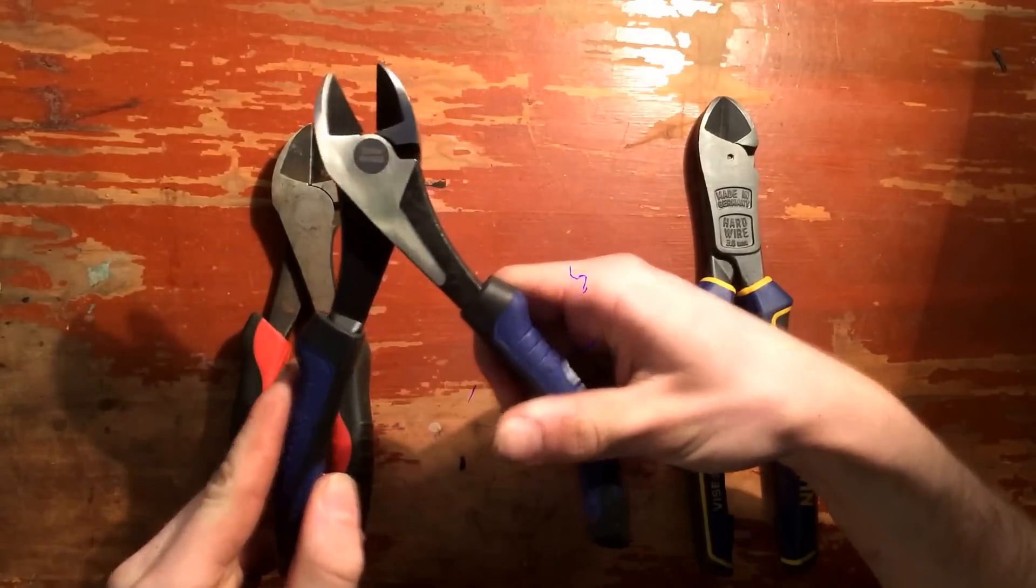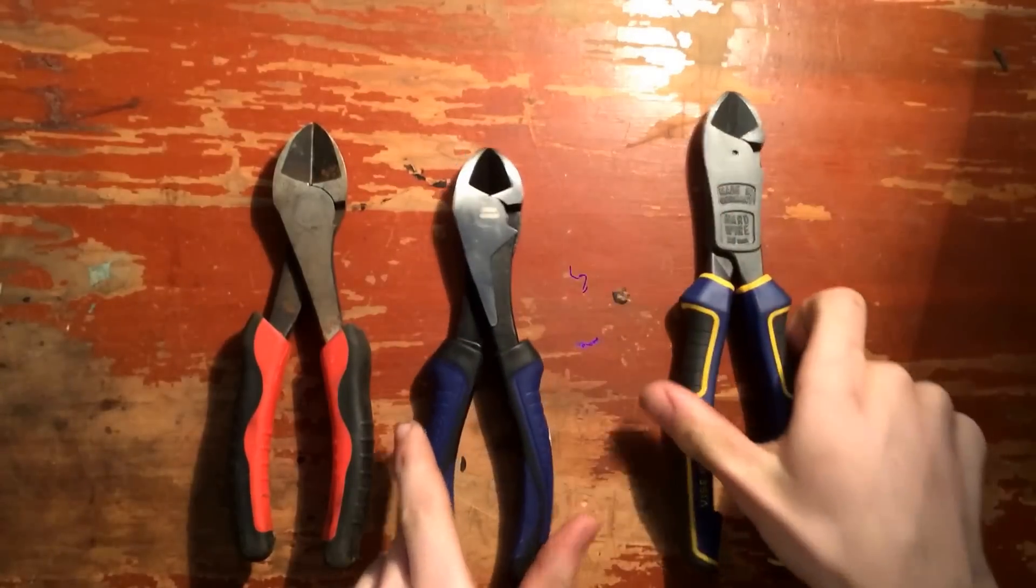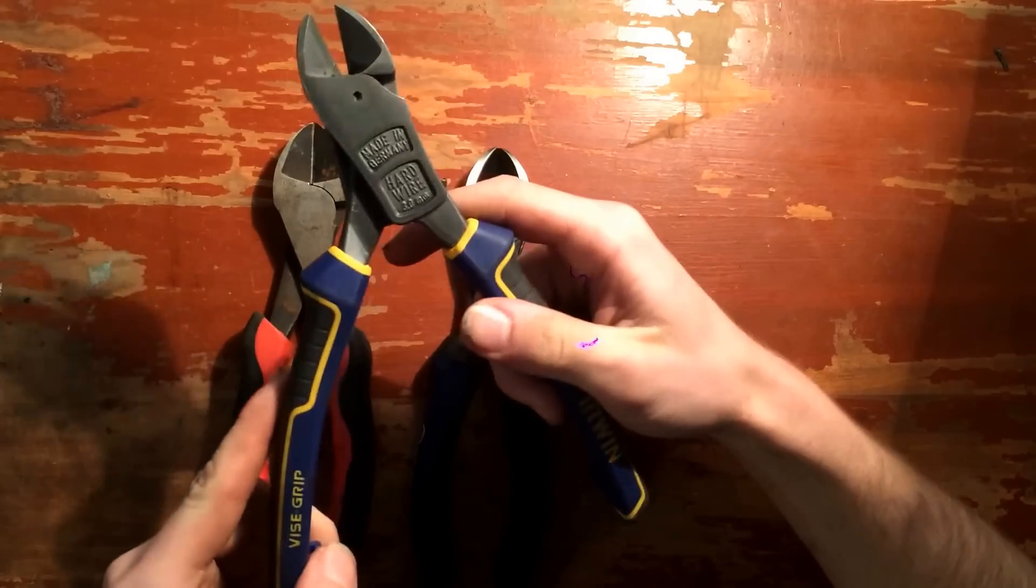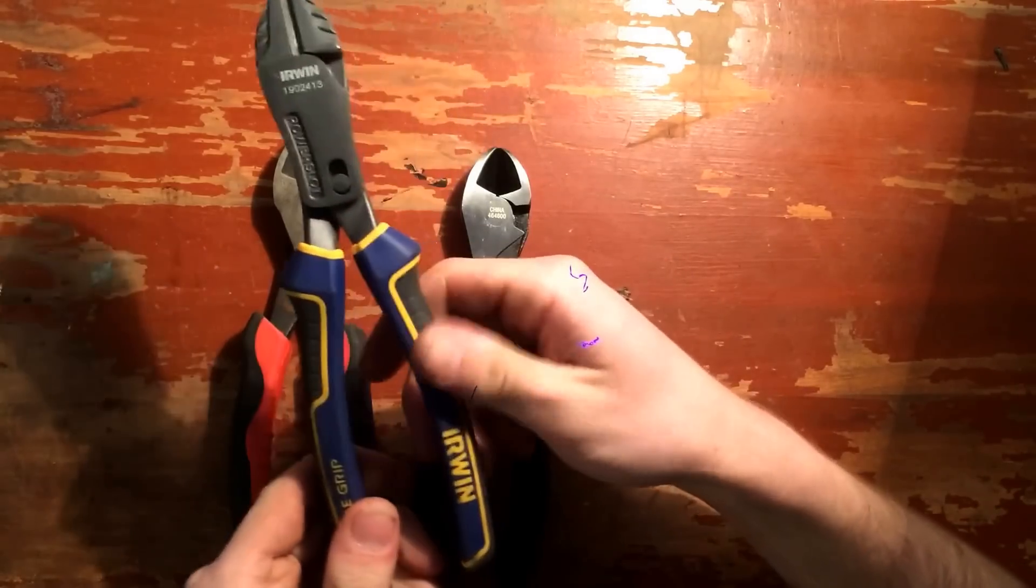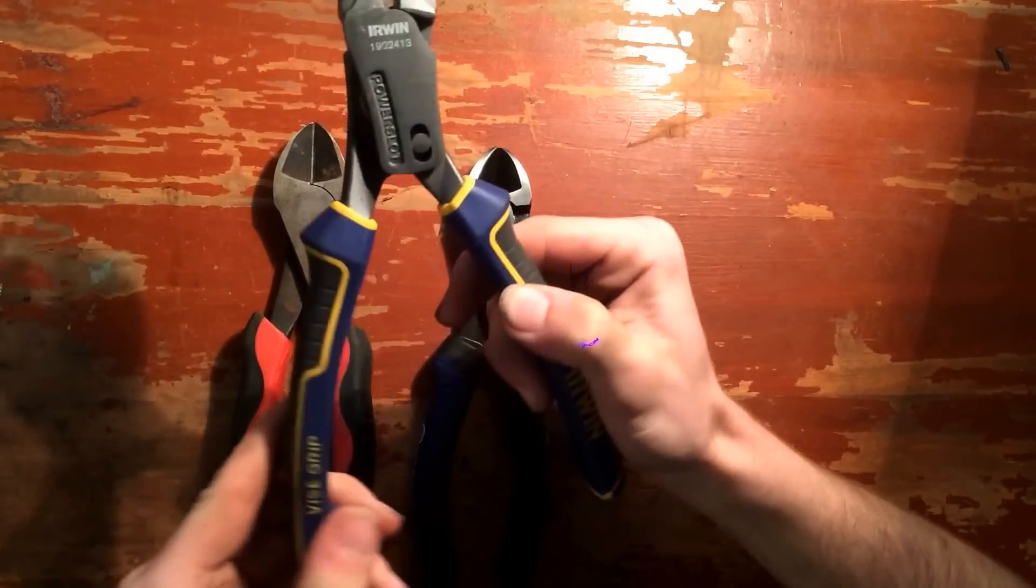And Cobalt, these ones are brand new side cutters, and then Visegrip, Irwin Visegrip Compound Leverage, the power slot side cutters.